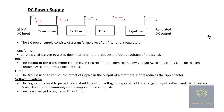In order to reduce the ripples we will be using filters. Filters basically reduce the amount of ripples, that is, the amount of AC components present in the rectified output. What we want is a regulated DC output — a constant voltage. So we need to reduce all the ripple AC components present in the output, and the filter will reduce the amount of ripples.